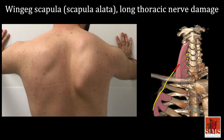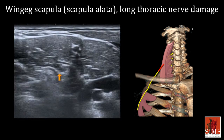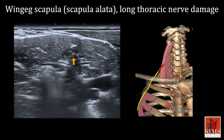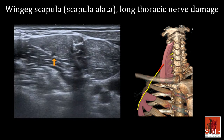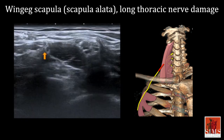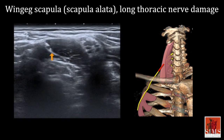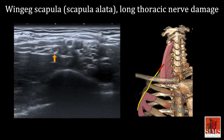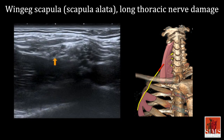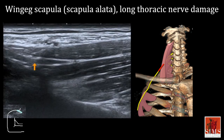Here is an example of long thoracic nerve damage in a patient around 20 years of age who has winged scapula (scapula alata), with gradual onset secondary to his arms stretching when he tried to rein in a horse. Here we are in the interscalene space. In the middle of this space, a small nerve penetrates the middle scalene. This small nerve corresponds to the long thoracic nerve where it emerges from the middle scalene. It is clearly thickened on both the axial and sagittal views.